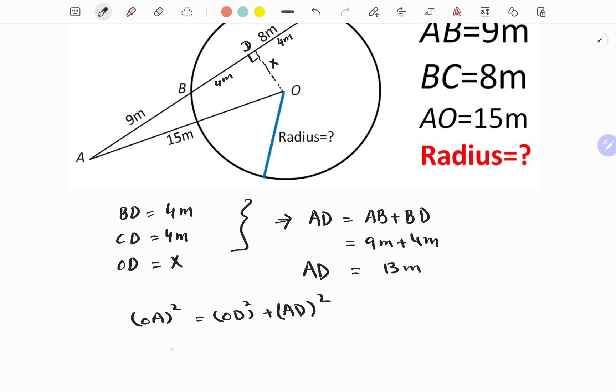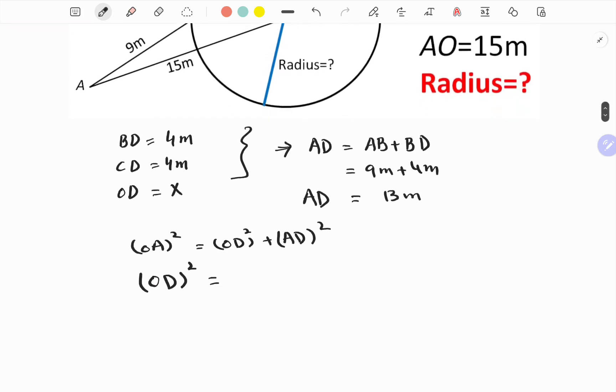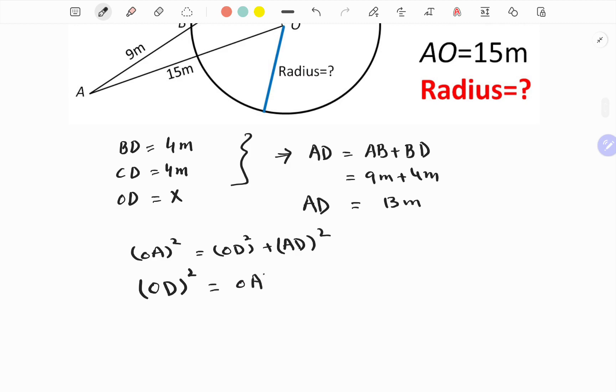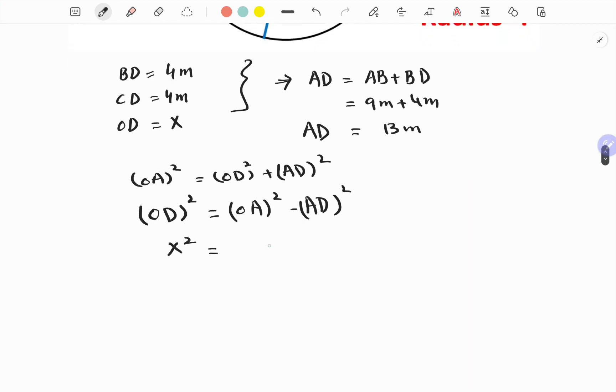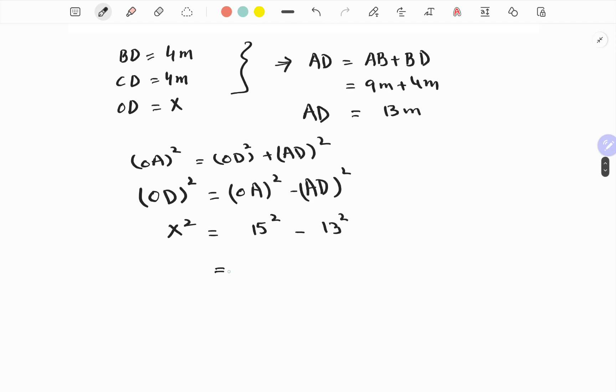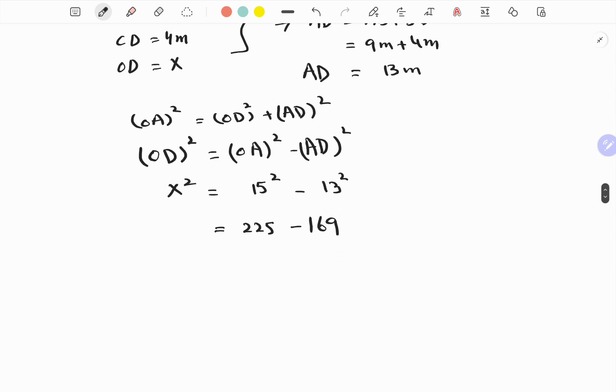We have to find OD, which is equal to x. OD squared is equal to OA squared minus AD squared, which is basically x squared, which is equal to OA squared is 15 squared minus 13 squared. And this is 225 minus 169, which is equal to 56 meters. X squared is 56 meters.